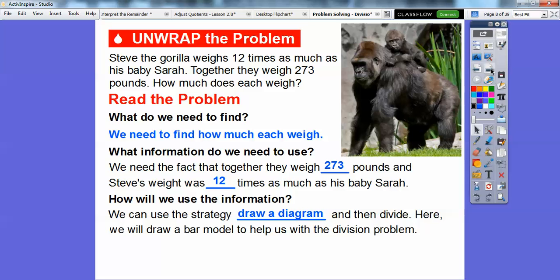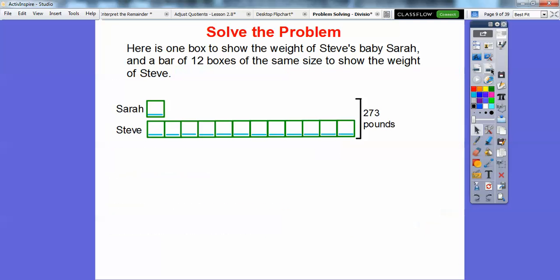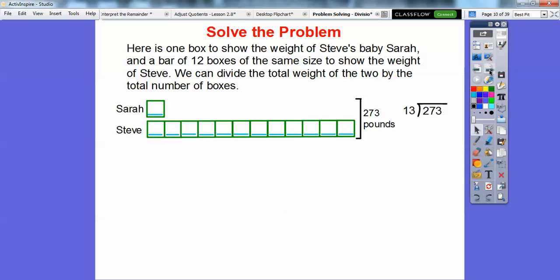Here we'll draw a bar model to help us with the division problem. So here's one box that shows the weight of Steve's baby Sarah. And then here's 12 boxes right here that shows the weight of Steve. So we can divide the total weight, which is 273 pounds by the total number of boxes.